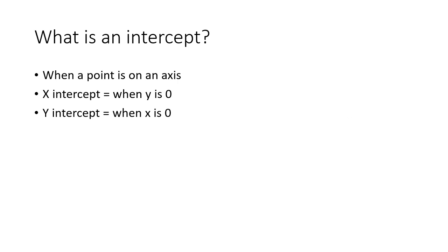So what is an intercept? Well, an intercept happens when a point is on an axis. So the x-intercept is when a point is on the x-axis and the y-intercept is when a point is on the y-axis. So what that translates to is the x-intercept happens when y is at zero and the y-intercept happens when x is at zero.